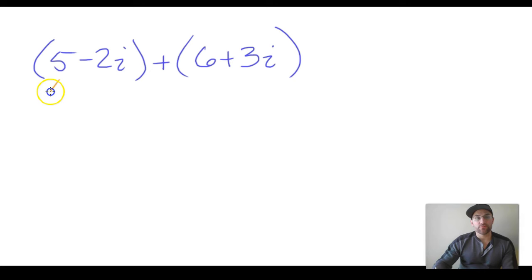Anytime we add or sum two complex numbers, what we do is grab the value of the real parts and perform the operation that's required. In this case plus, so we have 11. Then we simply grab the imaginary parts.